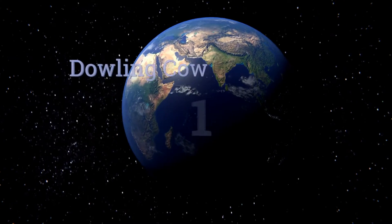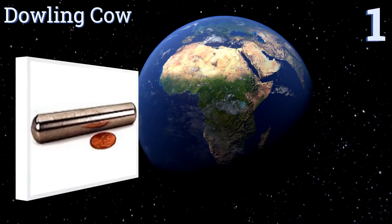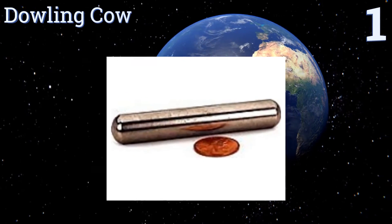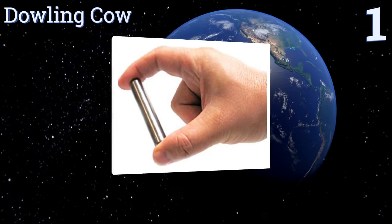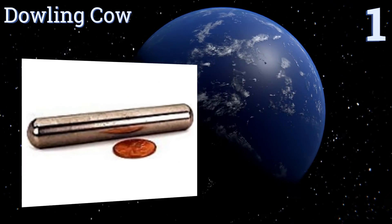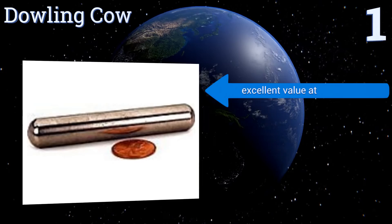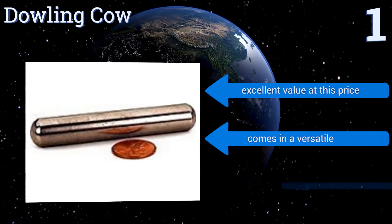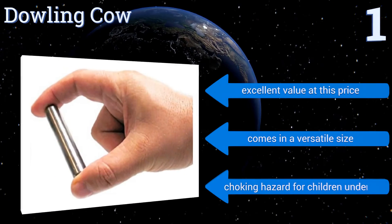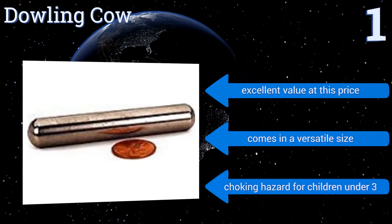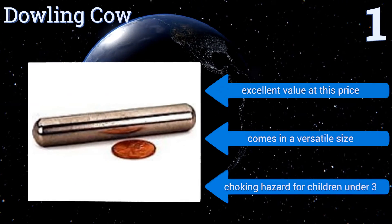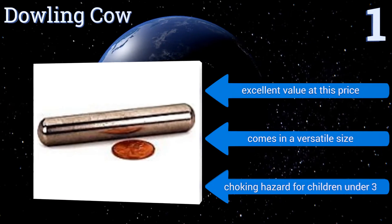And taking the top spot on our list, at 3 inches long and a half inch in diameter, the Dowling Cow is a robust multi-purpose magnet. Not only is it extremely useful for cattle and science projects, it's great for finding nails and screws behind drywall or picking up small metal parts. It's an excellent value at this price and comes in a versatile size, but note that it may be a choking hazard for children under 3.